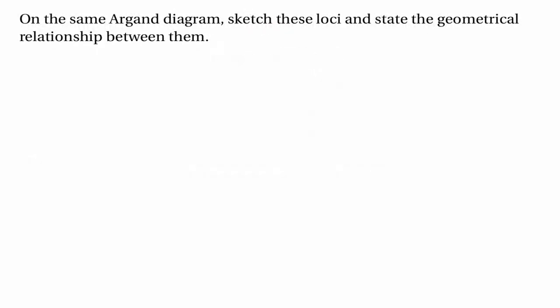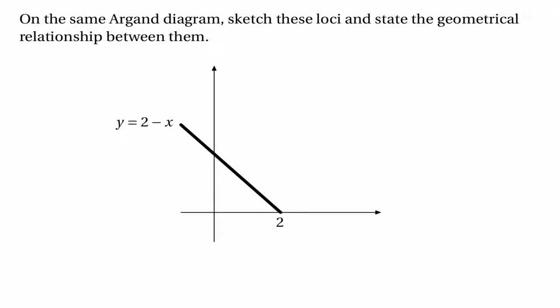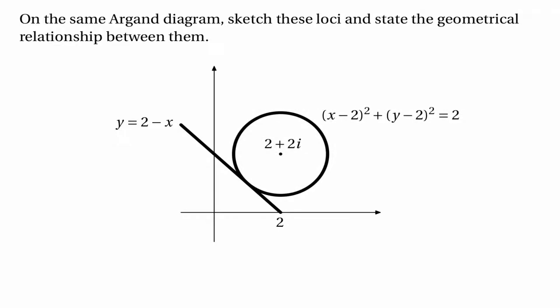We're told to sketch the loci and state the geometrical relationship between them. The half-line given by y equals 2 minus x starts at the point 2, and the other locus is a circle with centre 2 plus 2i and radius √2. The geometrical relationship is that the half-line is a tangent to the circle. We could have told this from the fact that the quadratic gave only one solution — one solution means the line just touches the circle, making it a tangent.